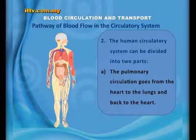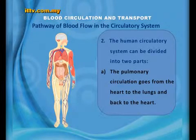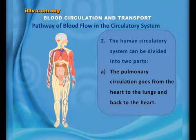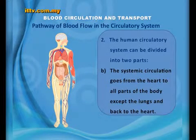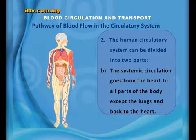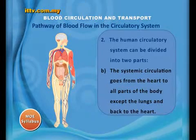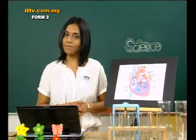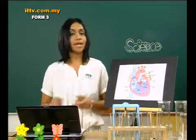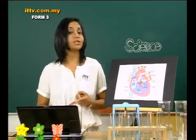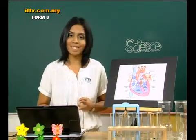The human circulatory system can be divided into two parts. Firstly, the pulmonary circulation goes from the heart to the lungs and back to the heart. The systemic circulation goes from the heart to all parts of the body except the lungs and back to the heart. The human circulatory system has two types of circulation: the systemic circulation, which is the greater circulation, and the pulmonary circulation, which is the lesser circulation.